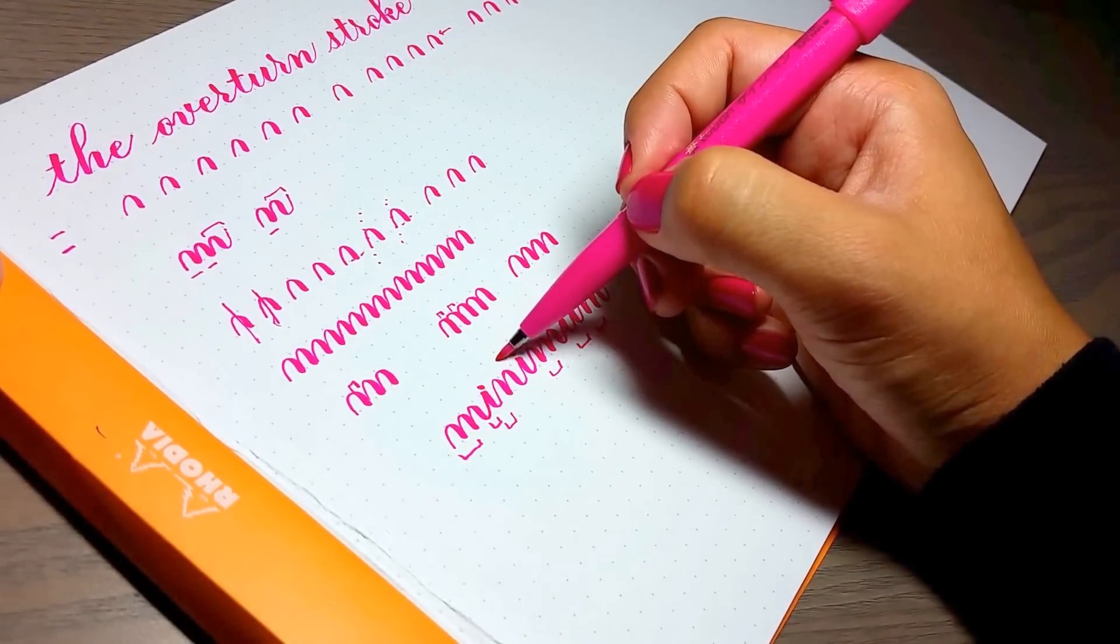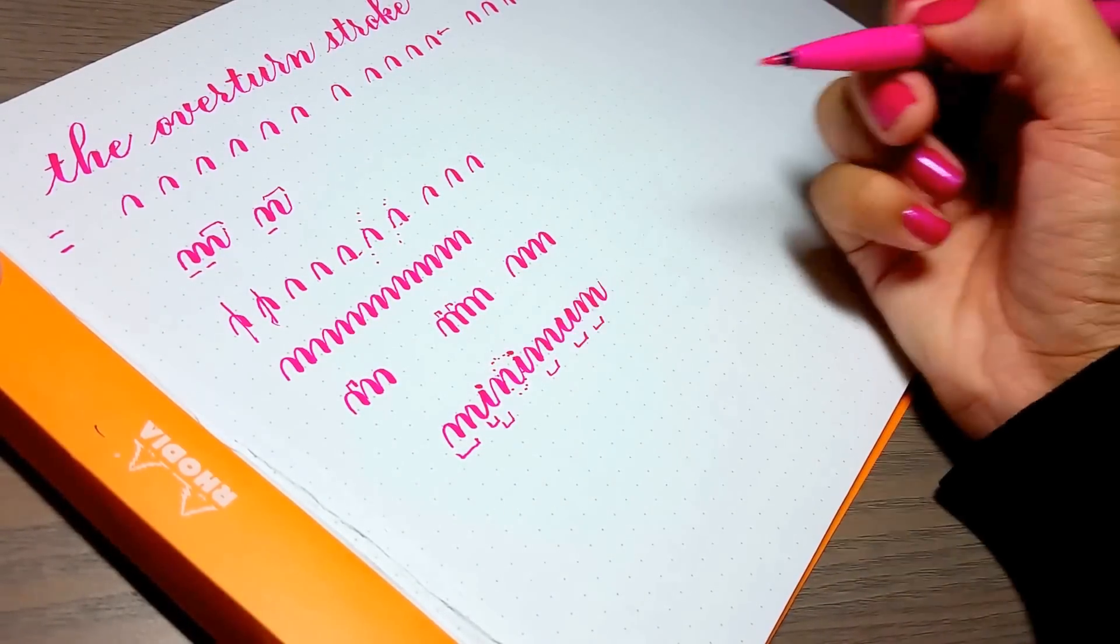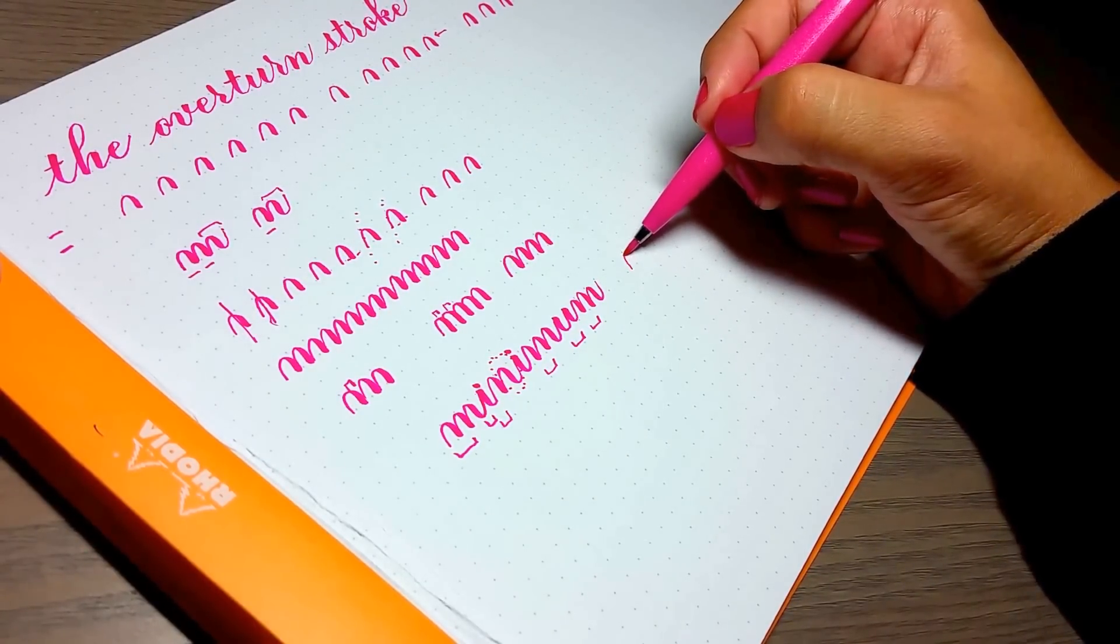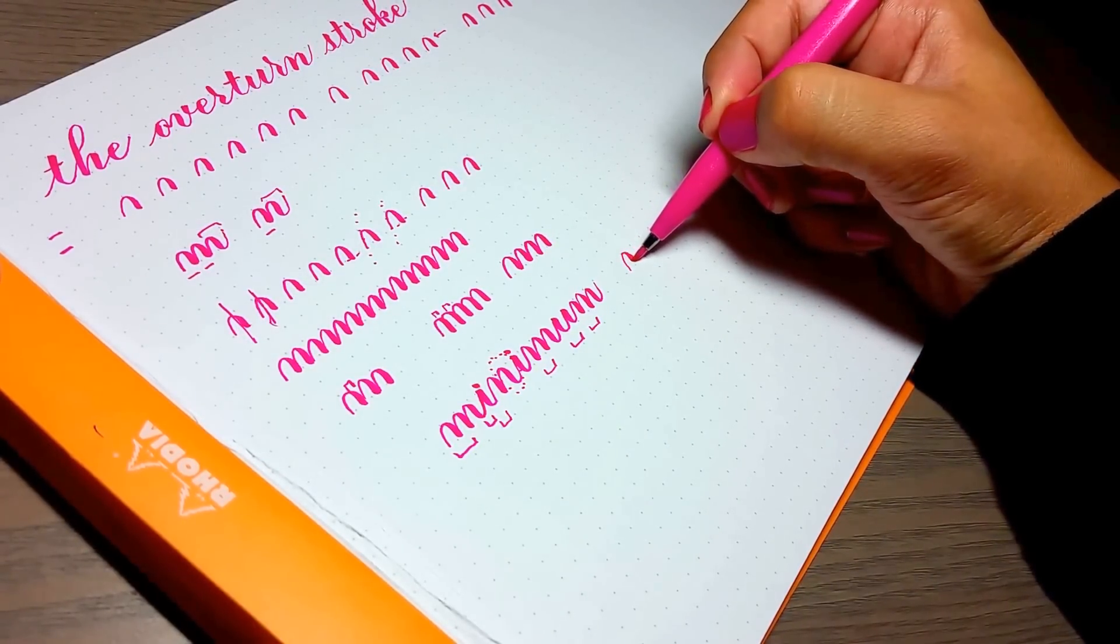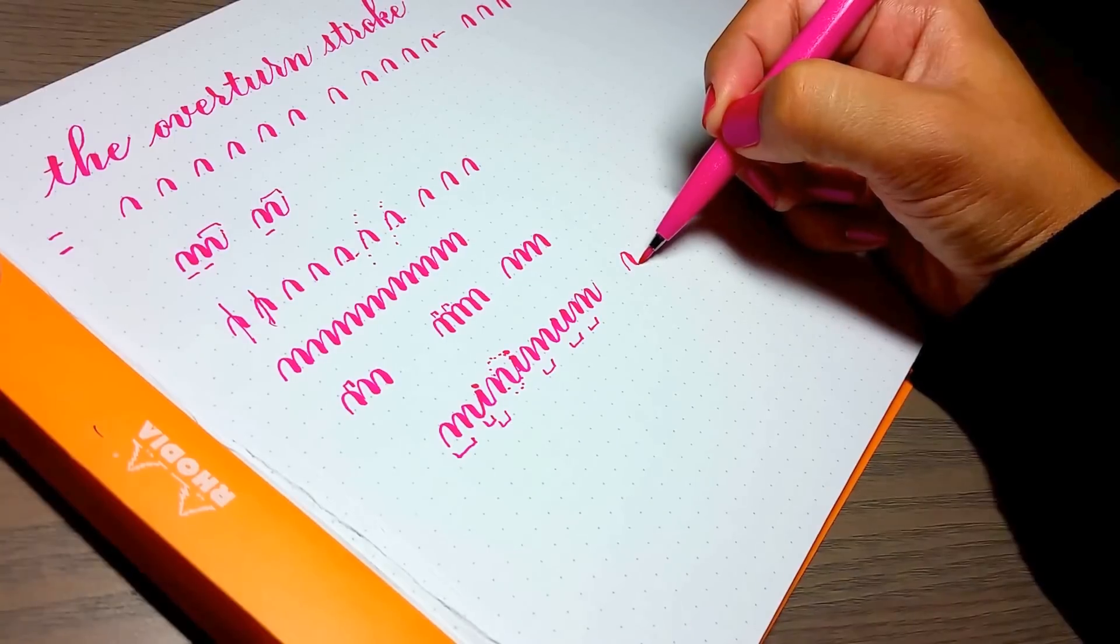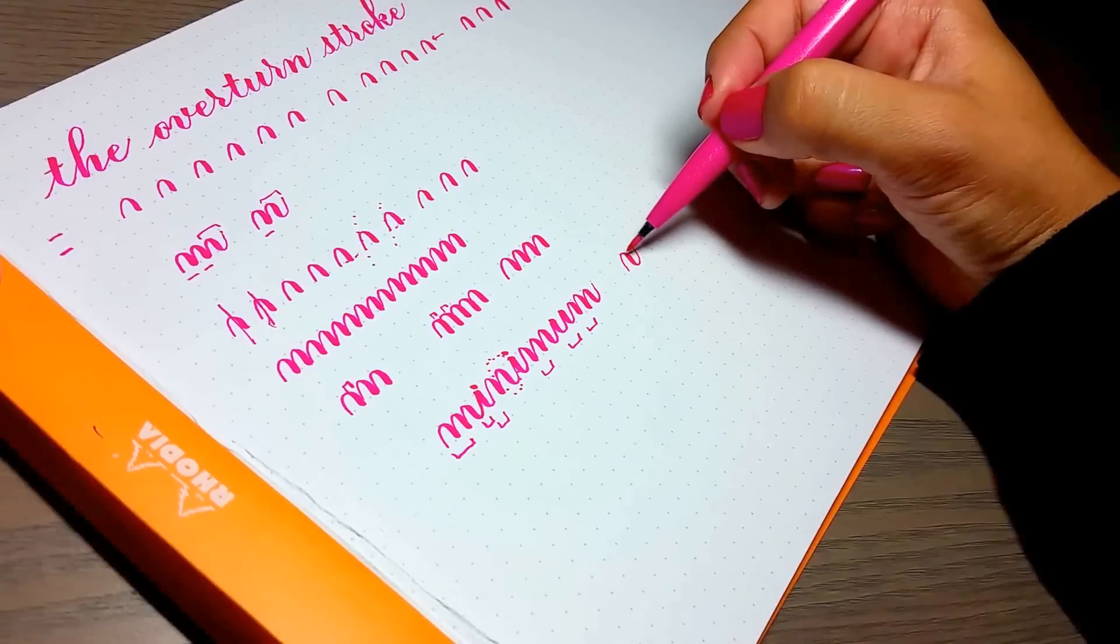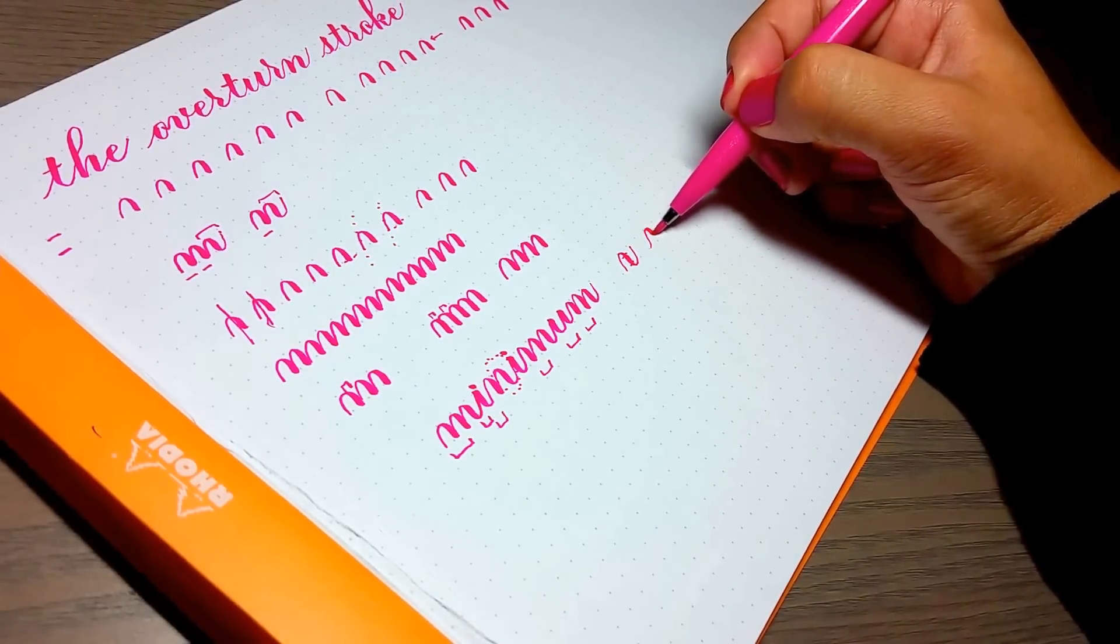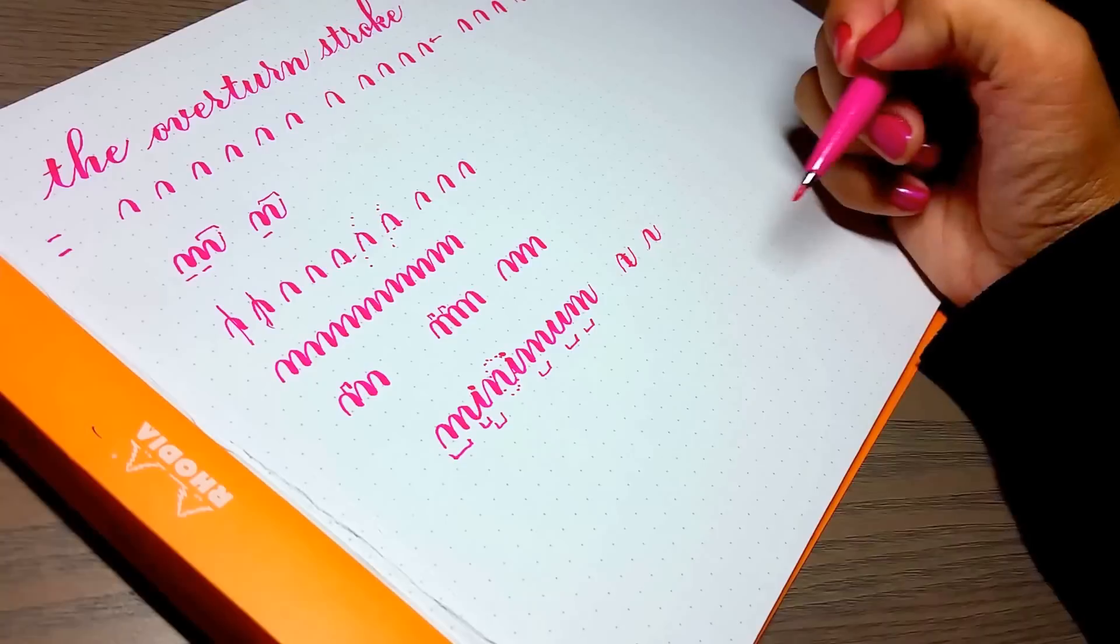The only stroke that's in here that we haven't discussed is the compound stroke, which is when you, I'll do a quick preview, when you do a thin upstroke, transition to a thick downstroke, and then you transition again to a thin upstroke. So the thickness is really isolated in between here. So we'll talk about that next week.